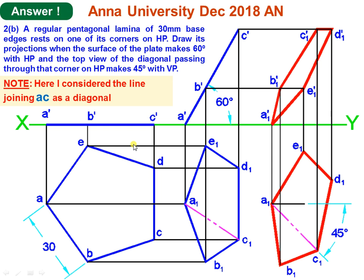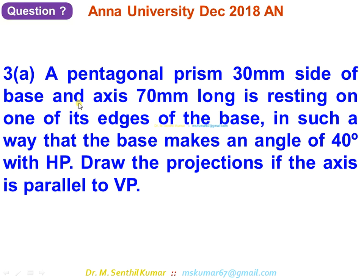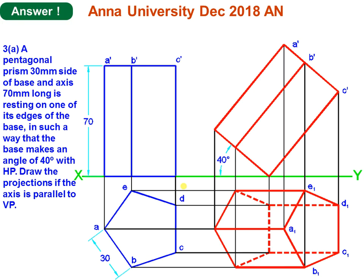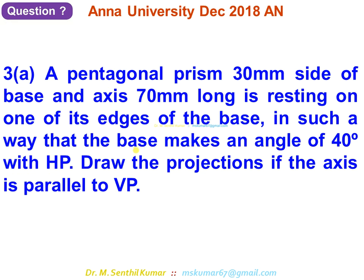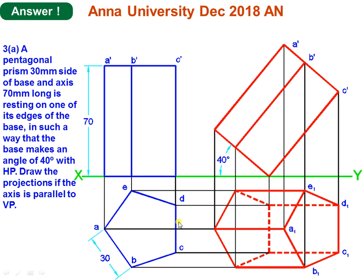Third question, 3a: a pentagonal prism of 30 mm side of base and 70 mm axis rests on one of its base edges such that the base makes 40 degrees with HP. Draw the projection if the axis is parallel to VP. Since the axis is parallel to VP, it is inclined to HP, so start from the front view. In top view, draw the pentagon with the right extreme as an edge, so when tilted, base edge CD rests on the ground.